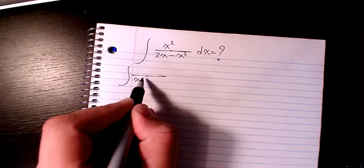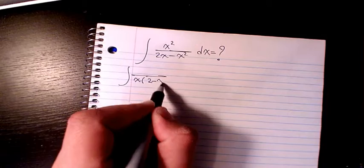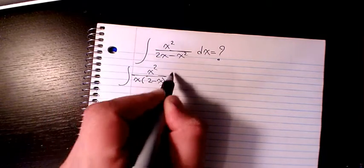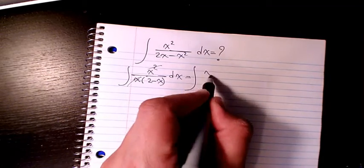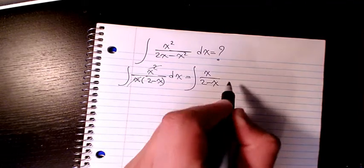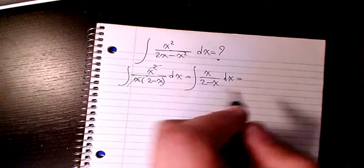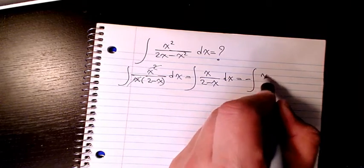The denominator is going to be x times (2 - x), and here we have x squared. This x squared and x cancel out and will be x divided by (2 - x) dx.